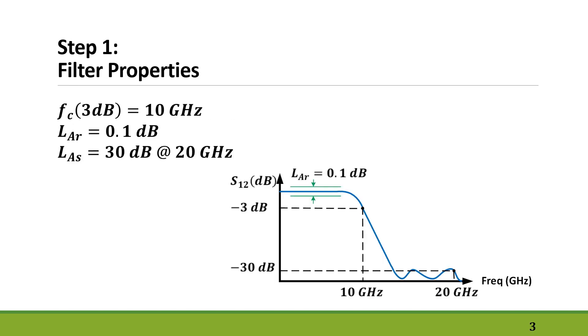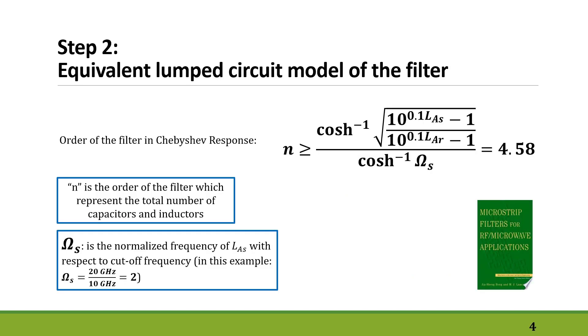We are going to design a low-pass filter with 3dB bandwidth of 10 gigahertz, passband ripple of 0.1 dB, and 30 dB loss at 20 gigahertz. To set the order of the filter, we will use this equation from Mr. Hoing and Mr. Lancaster's book, and it comes up with the number of 4.58, which we will round up to 5.